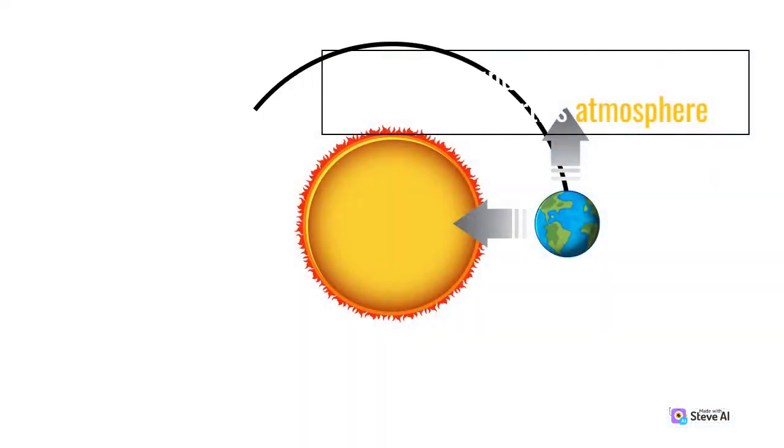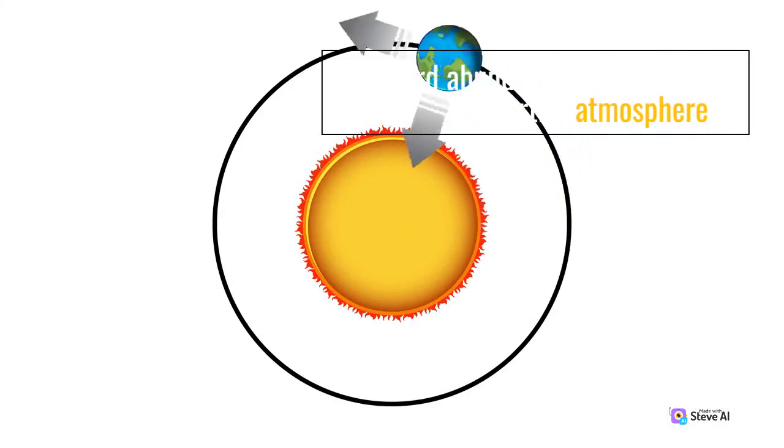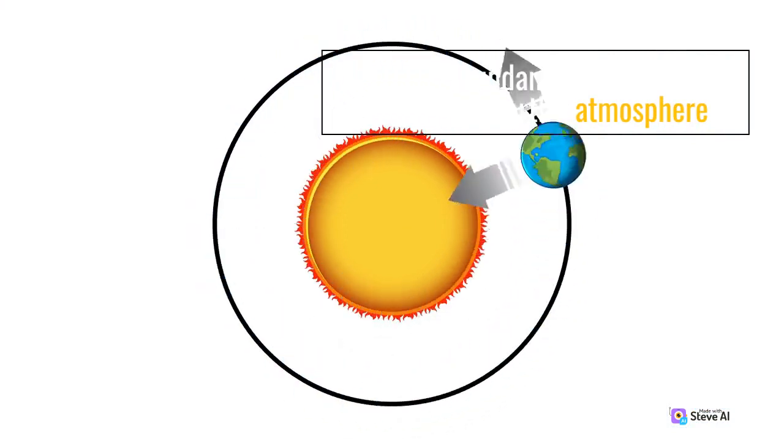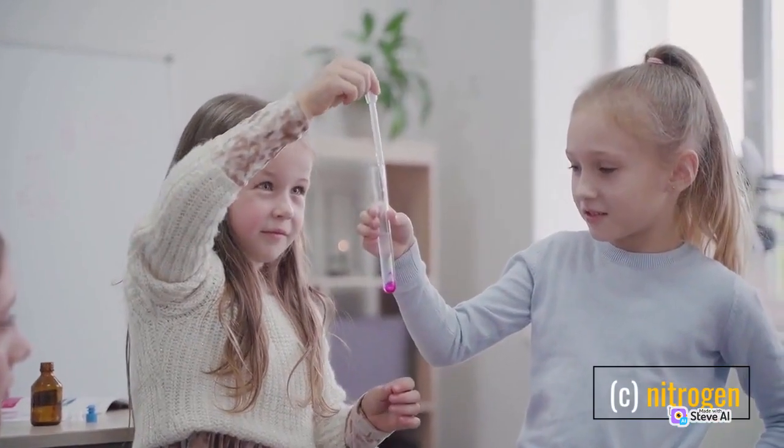The third abundant gas found in the Earth's atmosphere is? Answer: C — nitrogen.